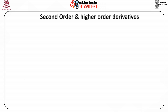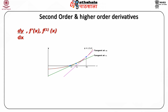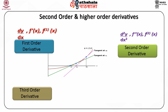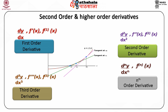In a given function y equals f(x), dy/dx is called the first derivative. The derivative of dy/dx is termed as the second derivative, represented as d²y/dx². Similarly, the third derivative is d³y/dx³, and it can go up to the nth derivative dⁿy/dxⁿ. The first, second, third, and nth derivatives are also denoted by f'(x), f''(x), f'''(x), and so on up to f⁽ⁿ⁾(x).